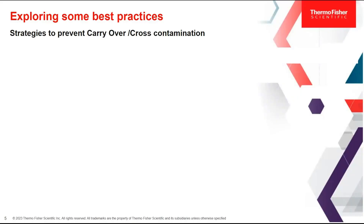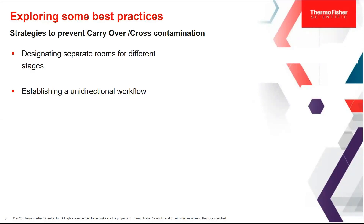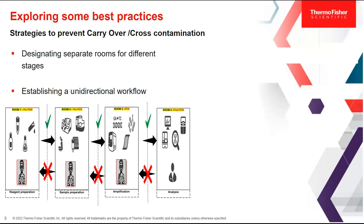Those were some of the more general lab strategies. Now let's move on to some specific strategies that are applicable for PCR workflows. Having a dedicated workspace and designated physically separate rooms or areas — such as pre-PCR and post-PCR — for the different stages of the workflow is essential. It is important to establish a unidirectional workflow to avoid backtracking and prevent accidental transfer of PCR products or contaminants between processed and unprocessed samples. As you can see in the diagram, I'm depicting the unidirectionality of any particular PCR workflow.